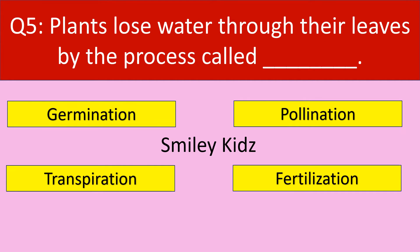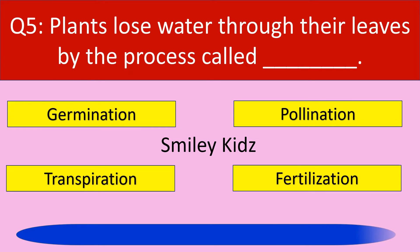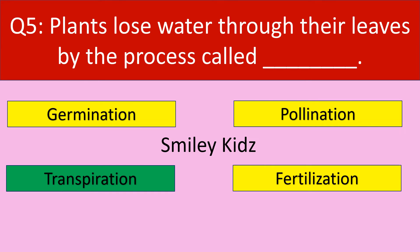Question number 5. Plants lose water through their leaves by the process called — germination, pollination, transpiration, or fertilization. Your time starts now. The correct answer is transpiration. Plants lose water through their leaves by the process called transpiration.